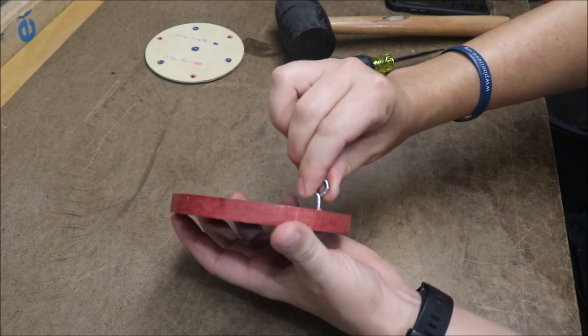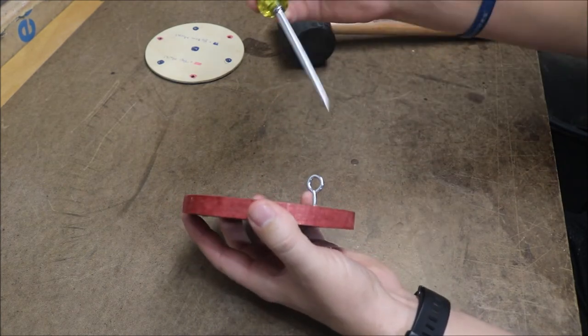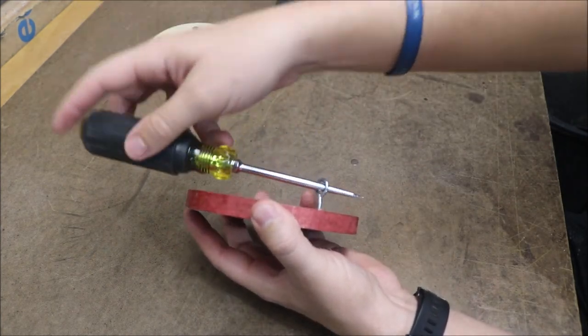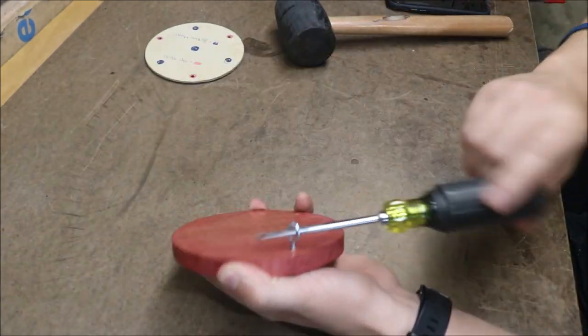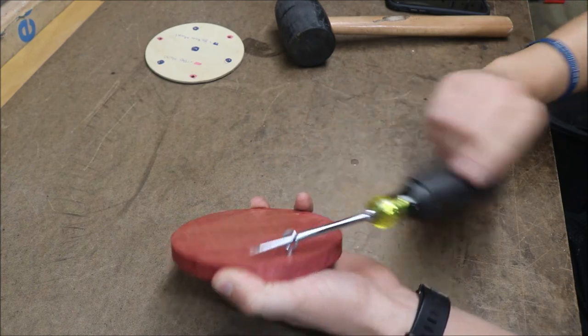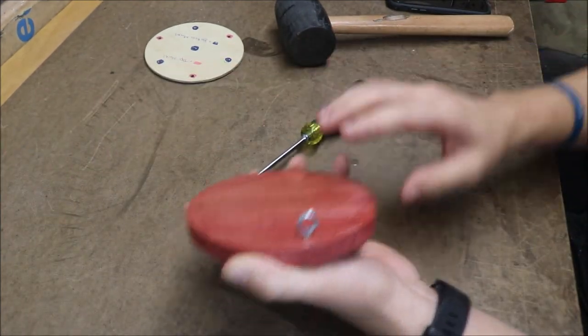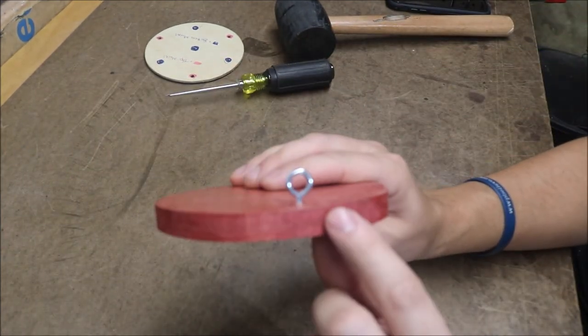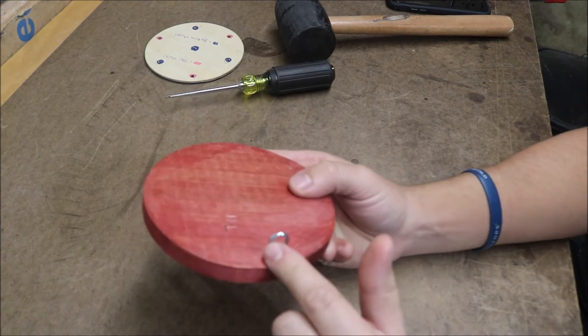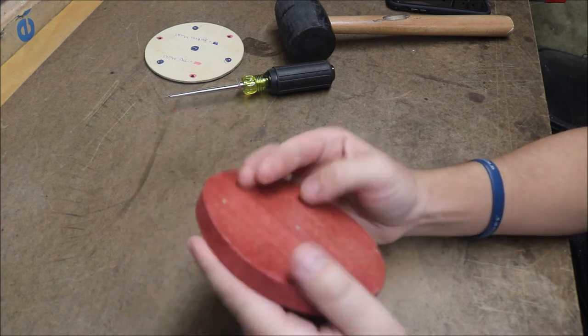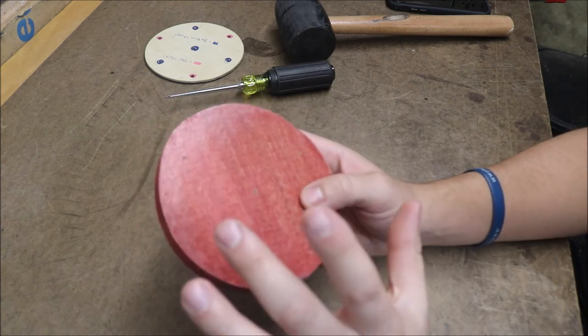Once it grabs and starts to get pretty tight, then the easiest way is just to take the scratch awl, put it through, and then start spinning around in a circle. And our goal is we want to do this until the little threads disappear and it kind of looks like this. So what we'll do is we'll do three for the top, and then after we're done with the top, we'll flip it over and do four for the bottom.